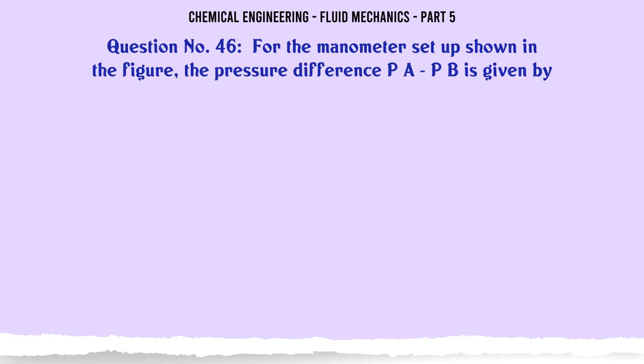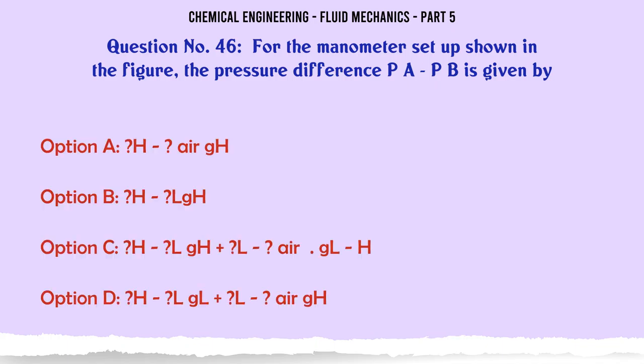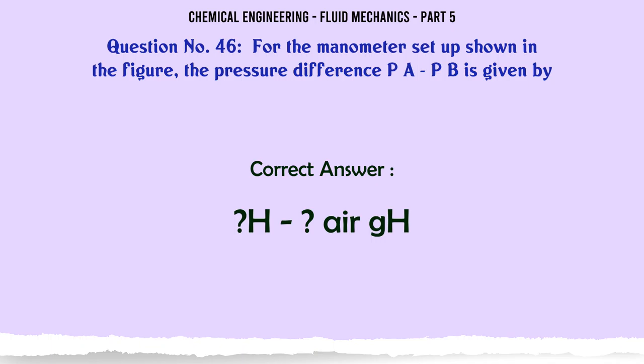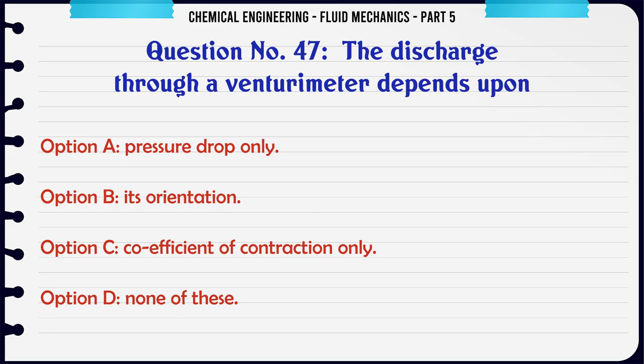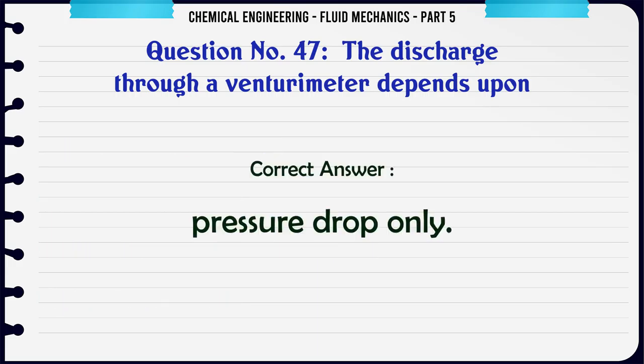For the manometer setup shown in the figure, the pressure difference PA - PB is given by: a) ?H - ?air gH, b) ?H - ?LgH, c) ?H - ?LgH + ?L - ?air, gL - H, d) ?H - ?LgL + ?L - ?air gH. The discharge through a venturi meter depends upon: a) pressure drop only, b) its orientation, c) coefficient of contraction only, d) none of these. The correct answer is pressure drop only.